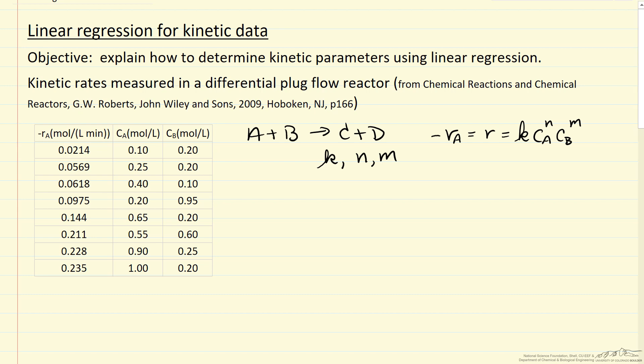The way we're going to do it is to take the log of this equation, so we have the log of rate is the log of K plus N times the log of concentration of A plus M times the log of the concentration of B.